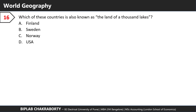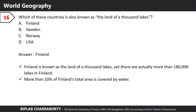Which of these countries is also known as the land of a thousand lakes? The answer is Finland. Finland is known as the land of a thousand lakes, yet there are actually more than 180,000 lakes. More than 10% of Finland's total area is covered by water.